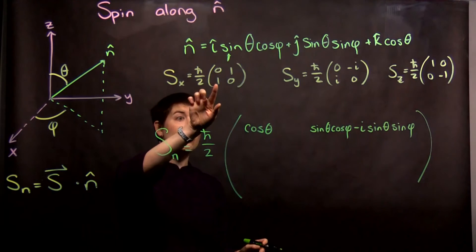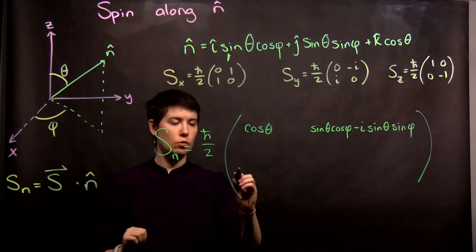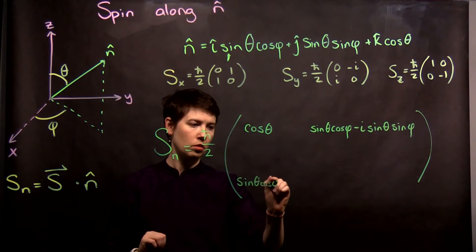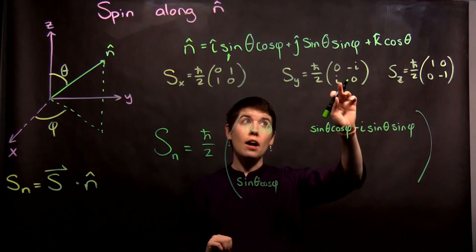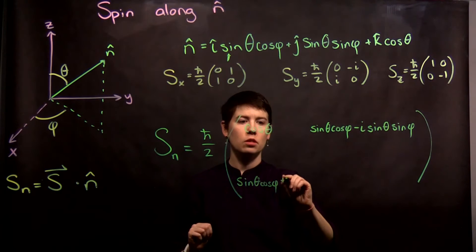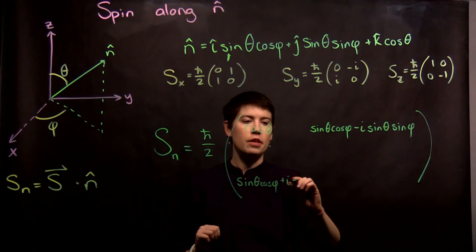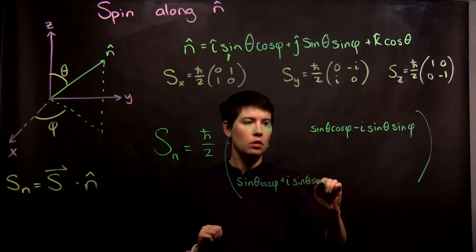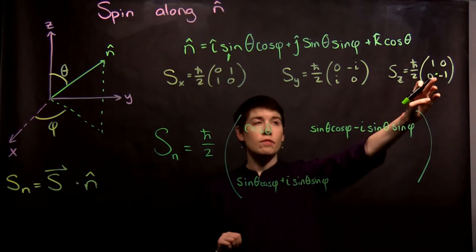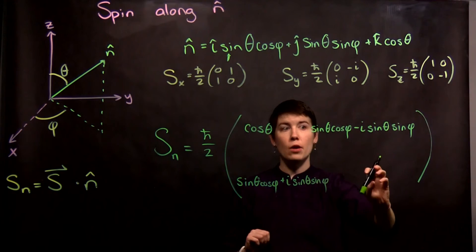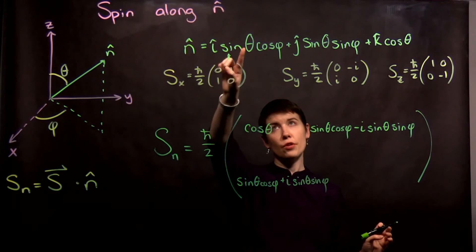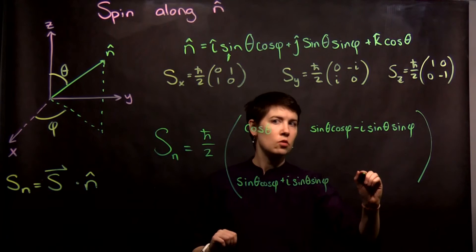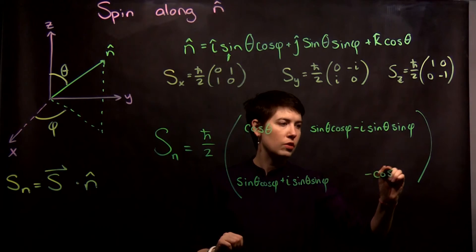Now we go down to this corner. I have a one again, so I have sine theta cosine phi. And then here I have an i, so positive i sine theta sine phi. And then here I have a zero, so this doesn't contribute. For the final corner: zero — nothing contributes, zero — nothing contributes, negative one, so I have negative cosine theta.